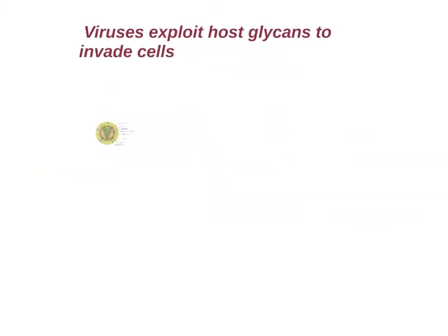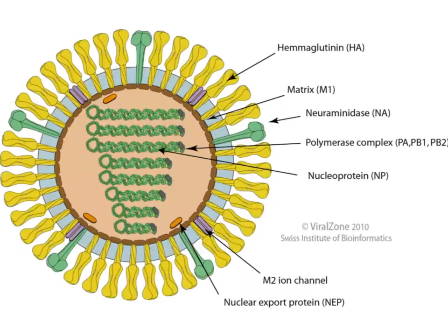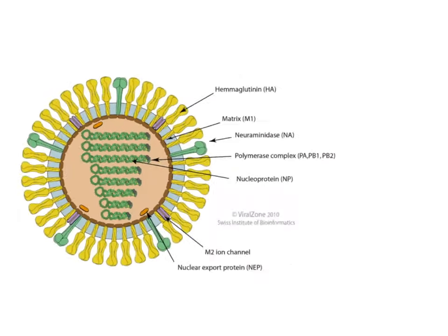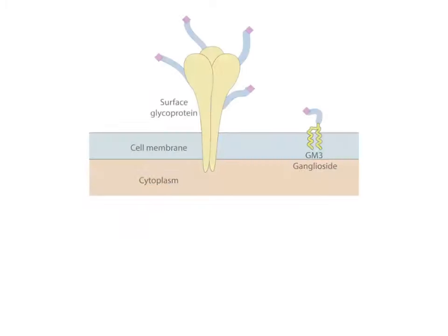Viruses also exploit glycans to enter into cells. We take the example of influenza in the following presentation. This is the surface of a lung, which influenza is infecting, and now we're talking about the glycans which are on the cell and how we represent them.